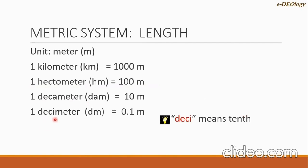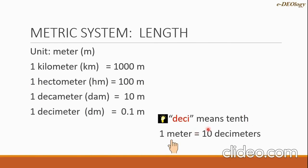The next unit is decimeter, with symbol dm. One decimeter equals 0.1 meter — 'deci' means tenth. Another way to write this formula is: one meter equals 10 decimeters.